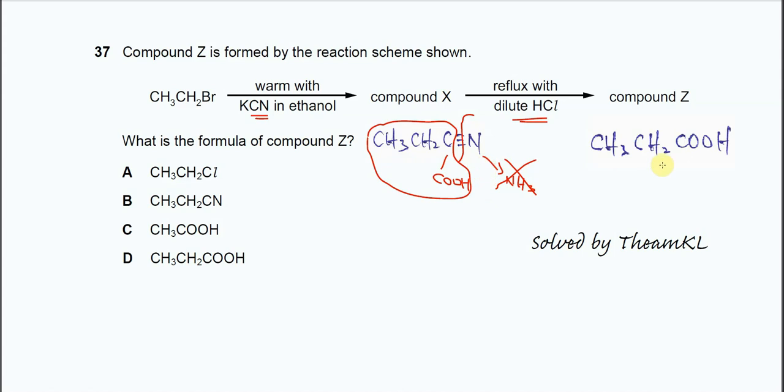Therefore, compound Z is propanoic acid. What is the formula of compound Z? It's very obvious it's the propanoic acid, not this ethanoic acid. It must be 3 carbons. Therefore the answer is D. Thank you.